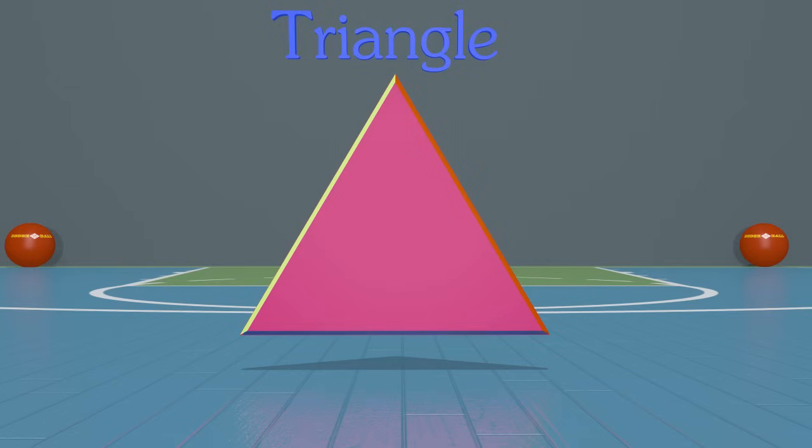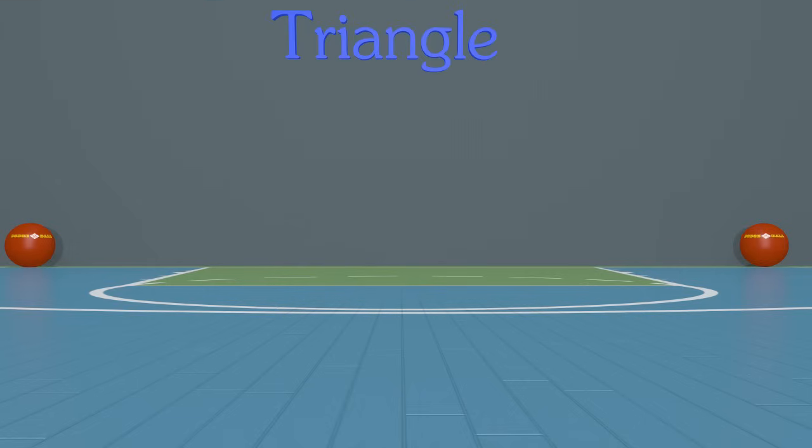This shape has one, two, three sides. Okay, it has three sides, but does it have three angles? Well, the angle is where two straight sides join together. Sometimes the angles are called corners. We can see that this triangle has one, two, three angles. So this shape is a triangle because it has three sides and three angles.